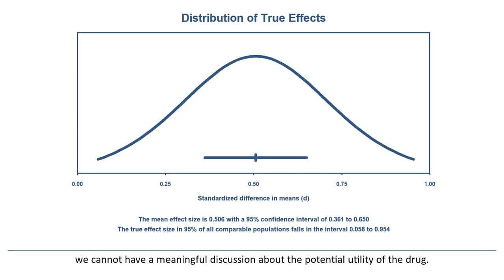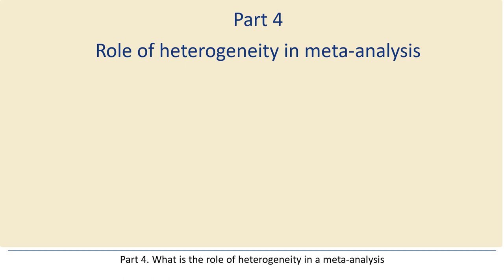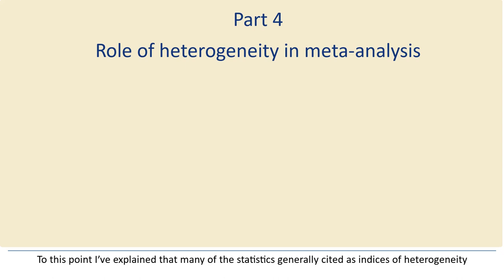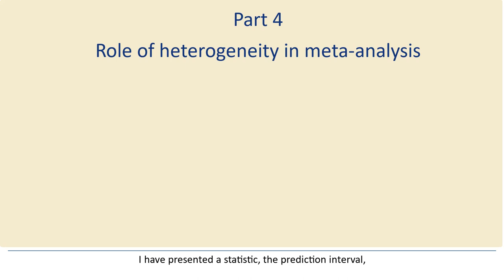Part 4: What is the role of heterogeneity in a meta-analysis? To this point, I've explained that many of the statistics generally cited as indices of heterogeneity don't actually tell us how much the effect size varies. And I've presented a statistic, the prediction interval, which does tell us how much the effect size varies. Now that we have that index, I want to discuss how to use it.